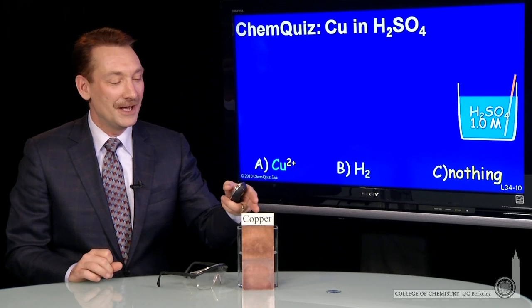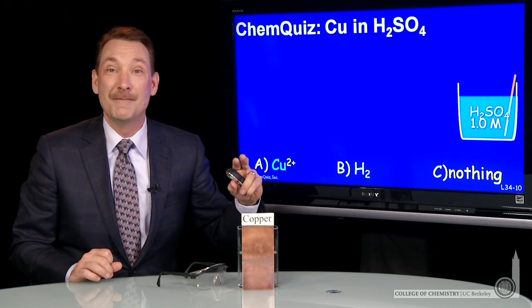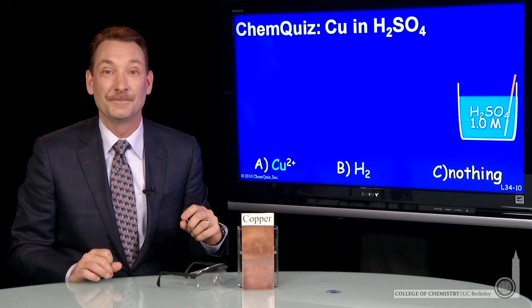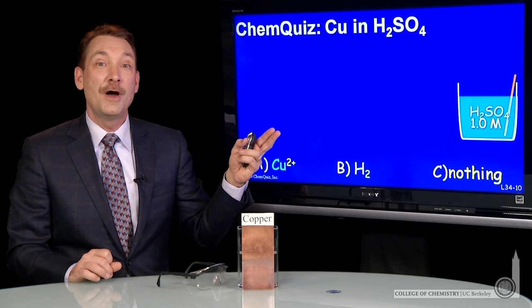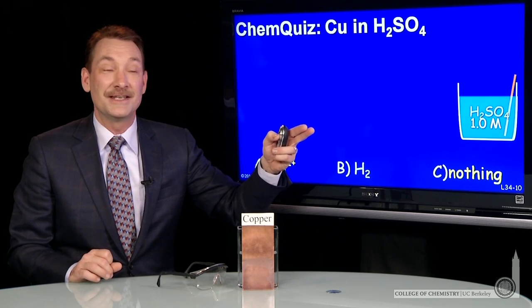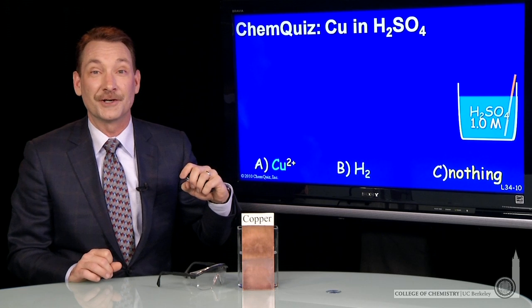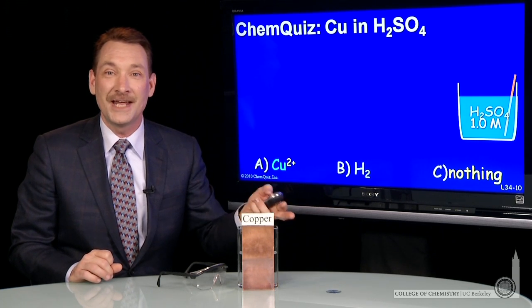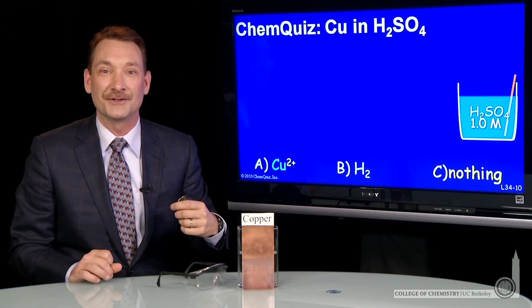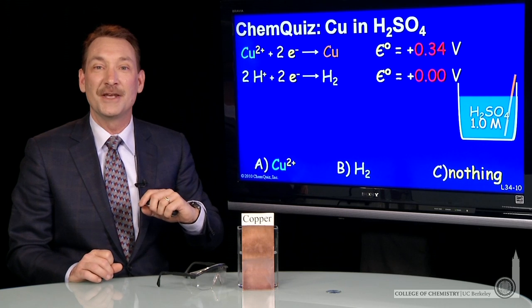We're talking about immersing some copper metal in sulfuric acid solution. So we want to know, what is the more stable state? Copper ions, hydrogen gas, or will no reaction occur? Well, we should go back to our table of standard reduction potentials, and I'll reproduce a bit of that table here.